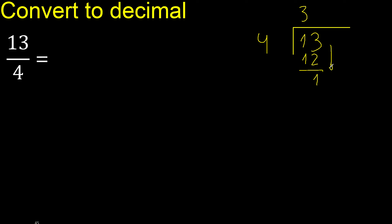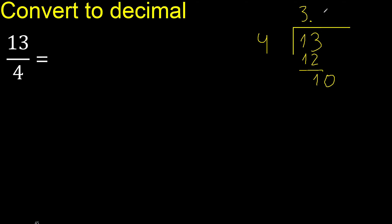There is no number that goes down, therefore complete. Always complete with 0 here, with point. 4 multiplied by which number — bring down 10.